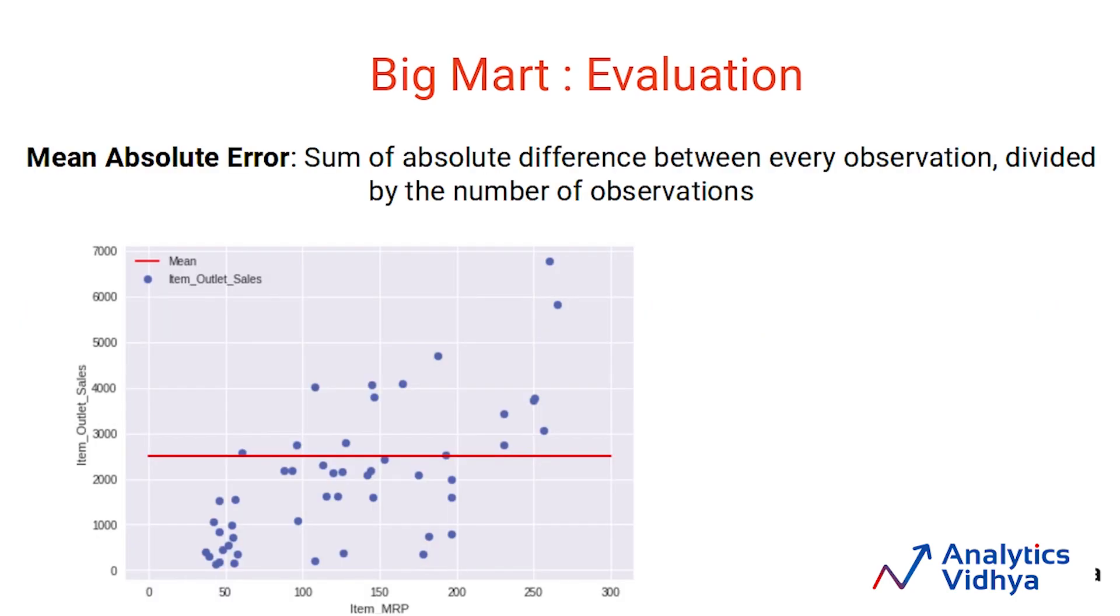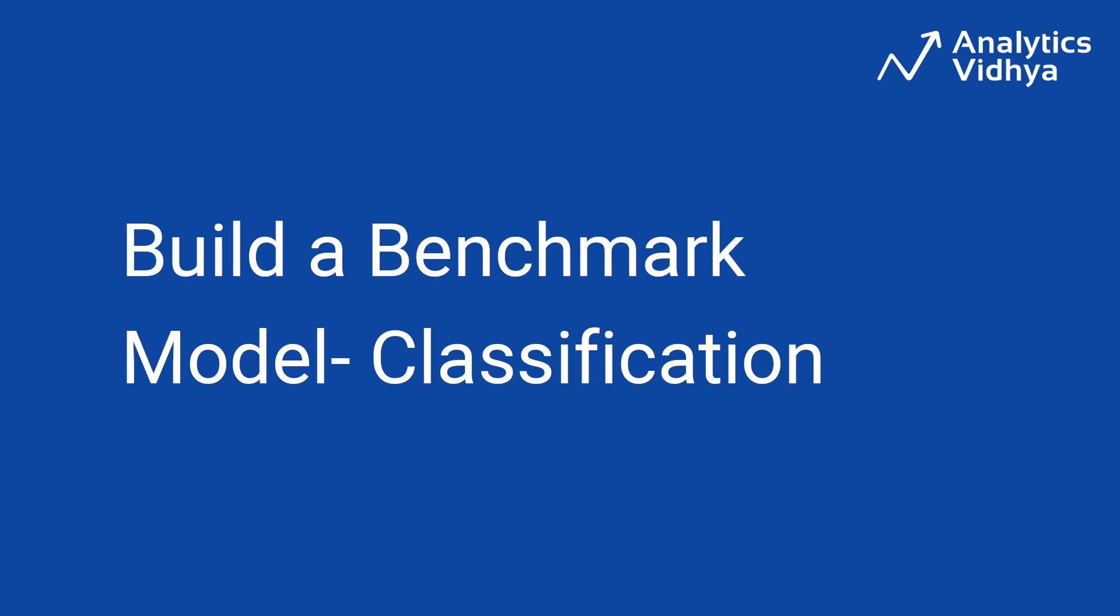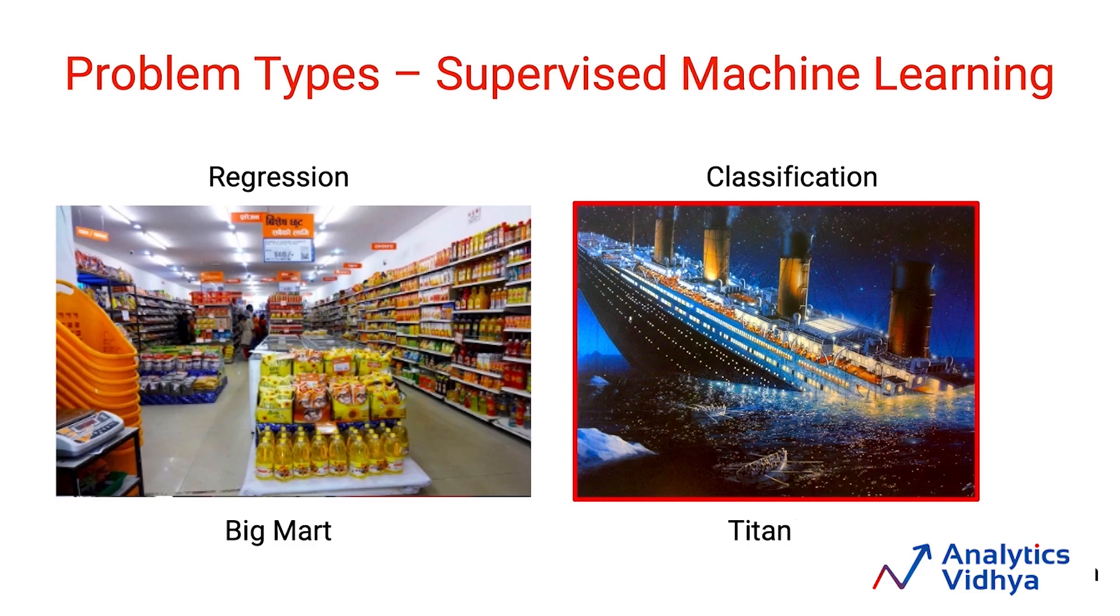Mean absolute error is the sum of absolute differences between the observation and the prediction divided by the total number of observations. So what you predicted and what it actually was, the difference of the two. When you take absolute value of it and sum it across all the data points, divided by the total number of observations, that is your mean absolute error. For example, let's say if we predicted the mean for all these data points. The prediction is represented by the red line, whereas the actual values are the blue points. The difference between the blue point and the red line vertically is the error in my predictions.